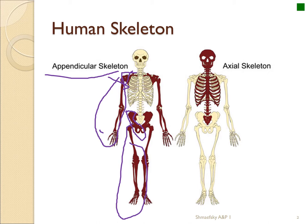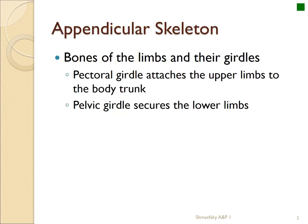The lower appendicular skeleton is very heavily attached, probably because that's our weight-bearing area where a lot of animals put most of their weight and strength into walking. The bones of the limbs and their girdles — "girdles" just means to wrap around, because it wraps around the axial skeleton.